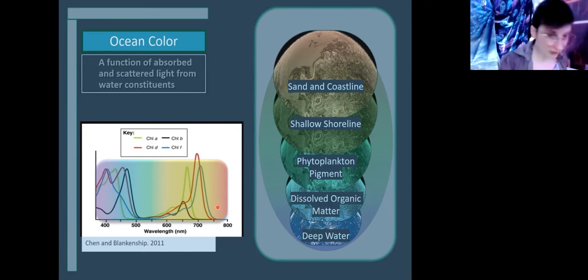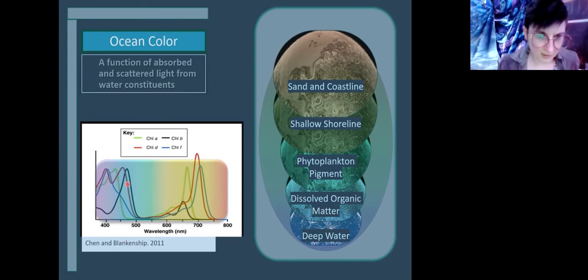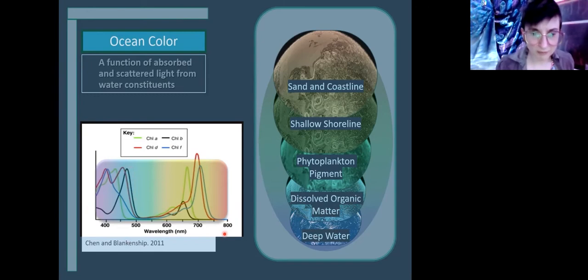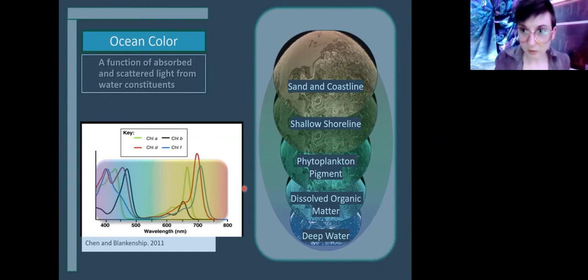I also set up this graph from Shannon Clankenship that was originally just these lines showing chlorophyll A, B, D, and F. What this is should be absorbance, I believe, on the y-axis here. So I overlaid this gradient of colors just to give you an idea of where each color sits on the spectrum of light, because that's really the most important part of ocean color.